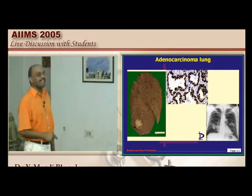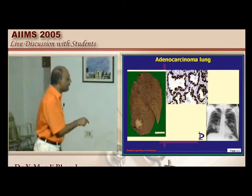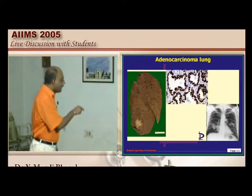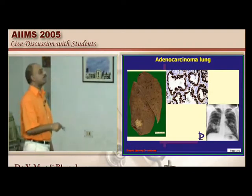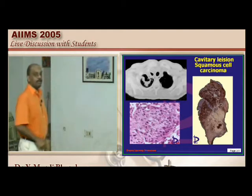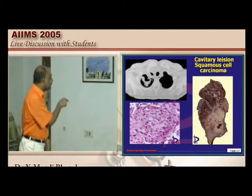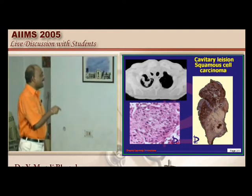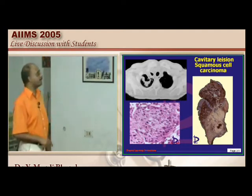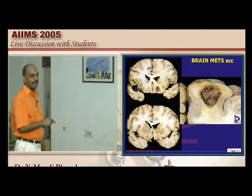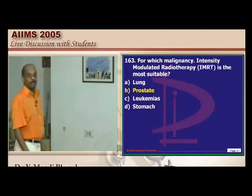It is an adenocarcinoma of the lung, which is more peripherally located, with a typical adenomatous glandular structure seen histologically. A cavitary lesion with cavitation represents a cavitary squamous cell carcinoma — something that should not be forgotten. These are the typical brain metastases that can occur in small cell carcinoma.